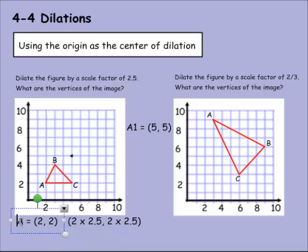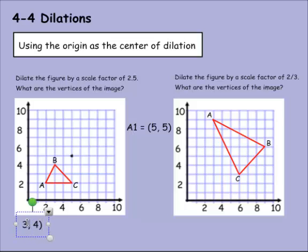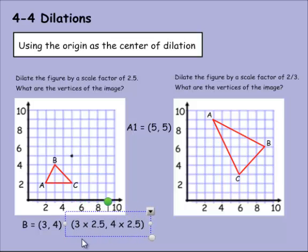To create a B1 coordinate, B is 3 and 4. We'll multiply both times the scale factor, 3 times 2.5 and 4 times 2.5. 3 times 2.5 is 7.5, so B1 equals 7.5, and 4 times 2.5 is 10. So my new coordinate for B1 is 7.5, 10.